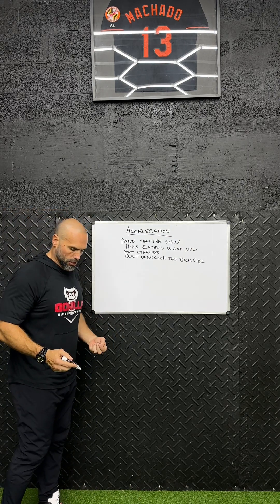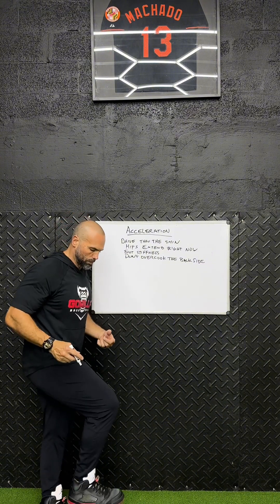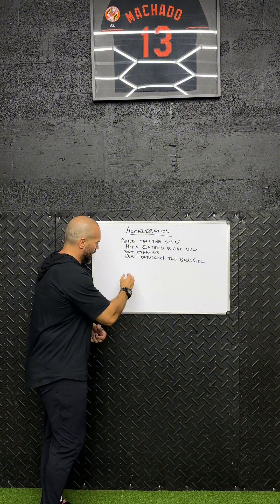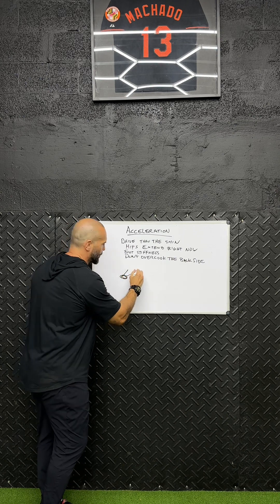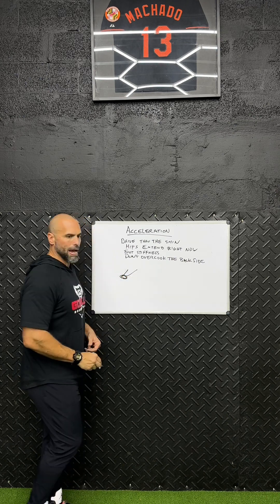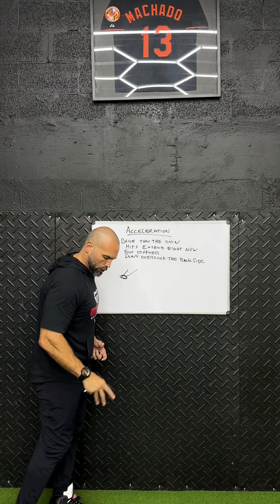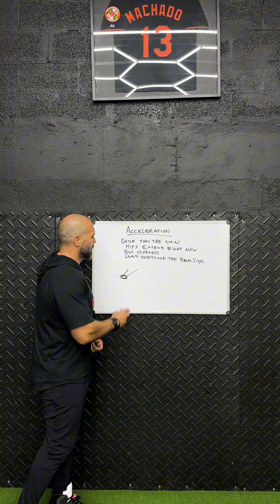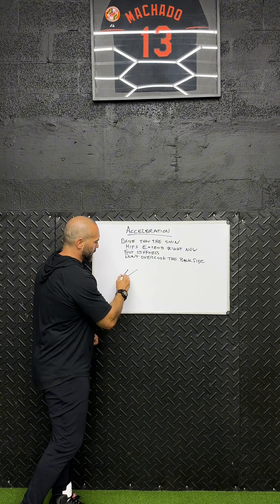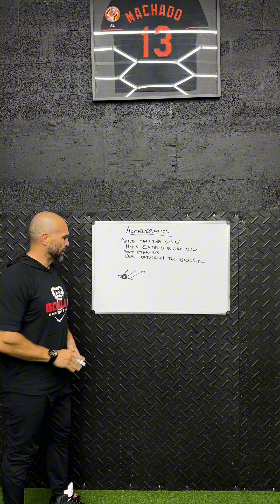Foot stiffness is going to be a big part of not bleeding energy. A lot of times we bleed energy when the foot hits the ground and there's a give of the foot before we can receive that energy back into our sprint. The stiffer we have our ankles and the stronger our foot when we hit the ground, the more we're able to receive that impact immediately and project our body forward.